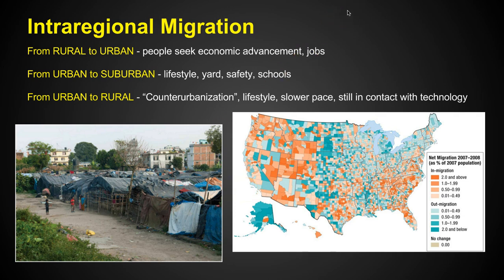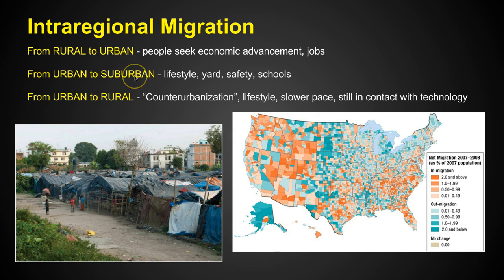We also have intra-regional migration — migration within the same region. The most common pattern is rural to urban, from the country to the city, where people are looking for jobs. We also have urban to suburban, where people who've lived in the cities want to move to the suburbs for a different lifestyle — a bigger yard, less concern about safety, less crime, and traditionally better schools. Another pattern is people moving from urban to rural, going all the way from the cities back to the country.